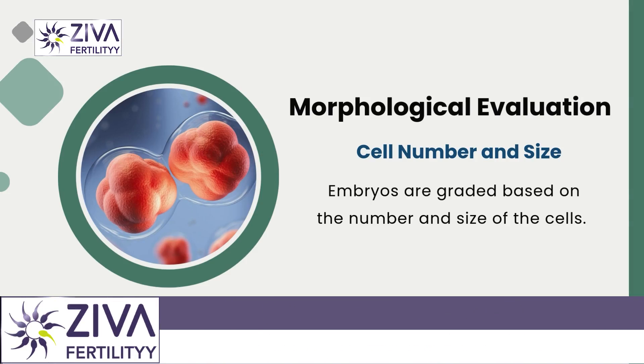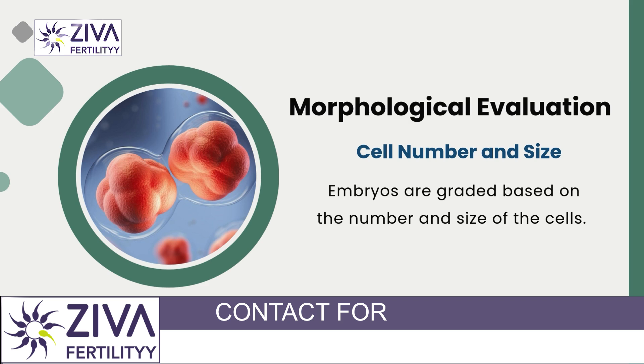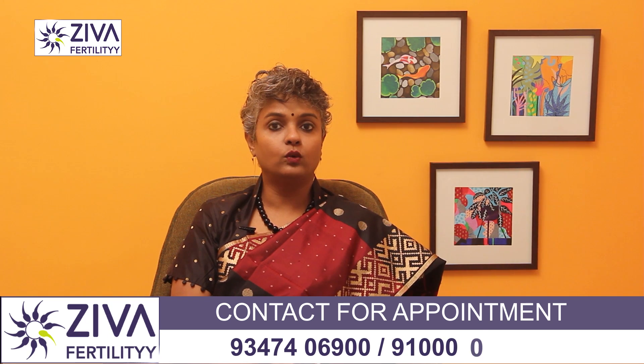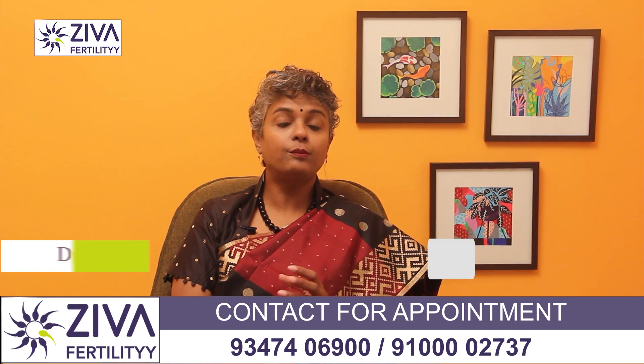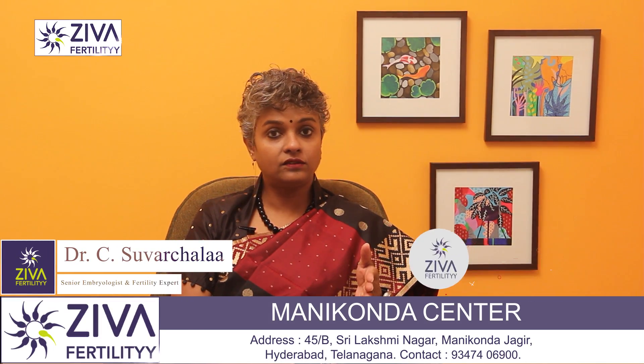Morphological evaluation is performed based on a number of factors such as cell number and size. Embryos are graded based on the number and size of the cells. For example, a normally dividing embryo at the cleavage stage would have an appropriate number of cells — so on day 3, for instance, it should have at least 8 to 10 cells.